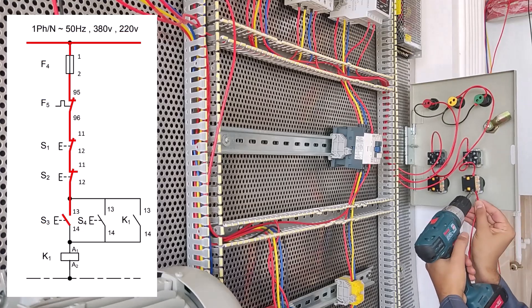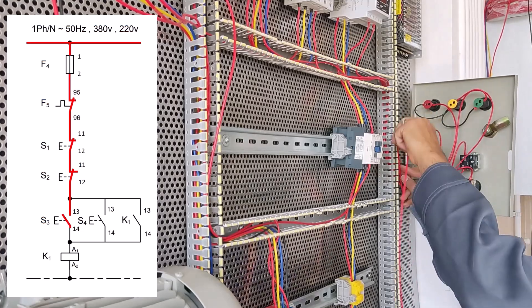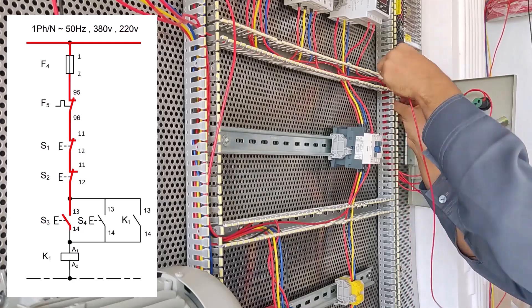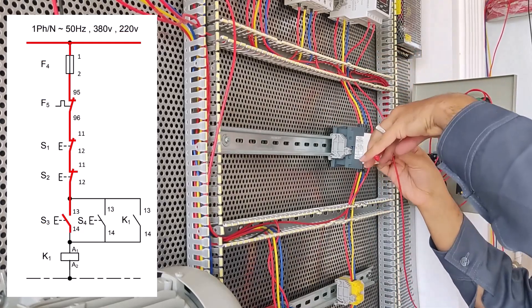Now we connect the conductor K1 from 14 starter S3 to A1.